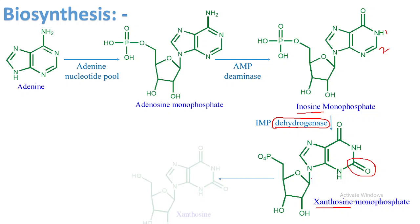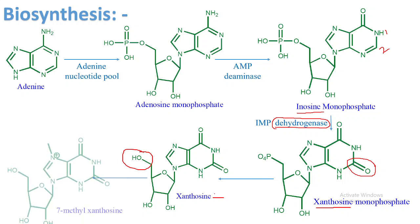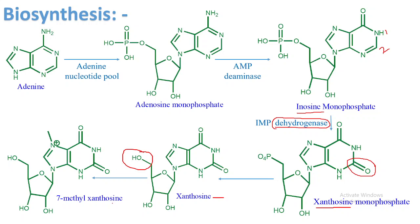Now, xanthosine monophosphate is converted into xanthosine by removal of the phosphate group. Next, xanthosine is converted to 7-methylxanthosine: at position number seven — counting around the ring as one, two, three, four, five, six, seven — that nitrogen at position seven receives an extra methyl group, giving 7-methylxanthosine.